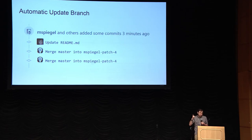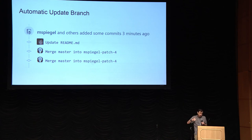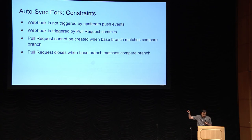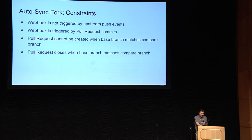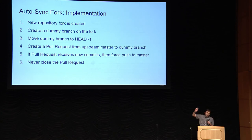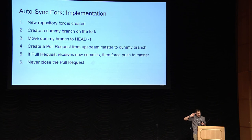Branch update is a great feature. If there have been commits made to the base branch, the bot will merge them into the compare branch as long as there are no conflicts. Another related feature is syncing forks — syncing a fork with its upstream. Now, webhooks don't give me the push events, but webhooks are triggered by pull request commits. So to shoehorn fork syncing in, the trick is to make a dummy branch, move that dummy branch backwards, create a pull request just for that dummy branch to get the webhooks, and then you can sync your forks.